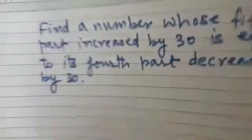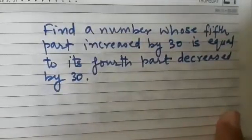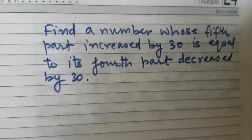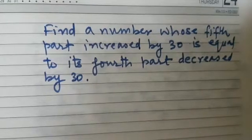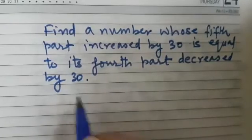Find a number whose fifth part increased by 30 is equal to its fourth part decreased by 30. Such an interesting question. So here we assume that the number to be x.